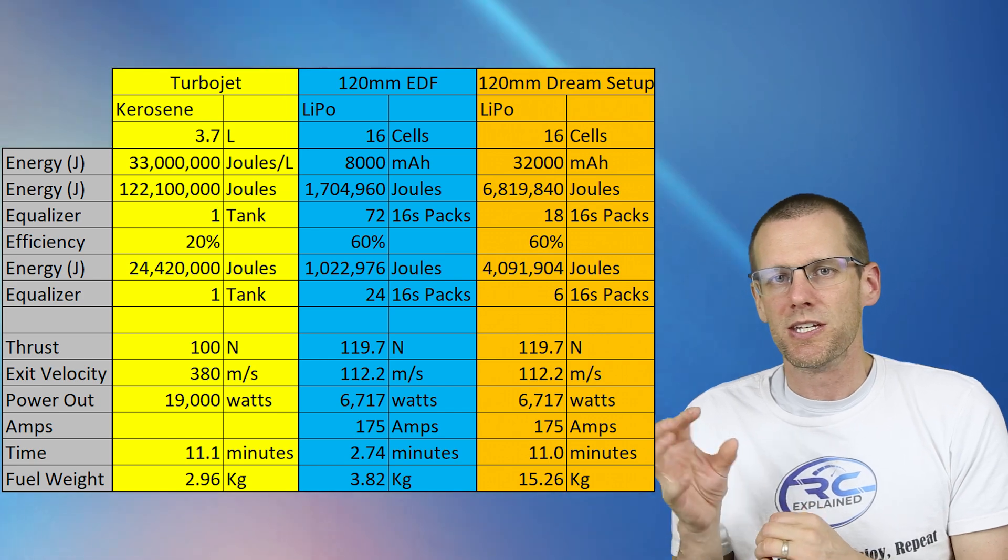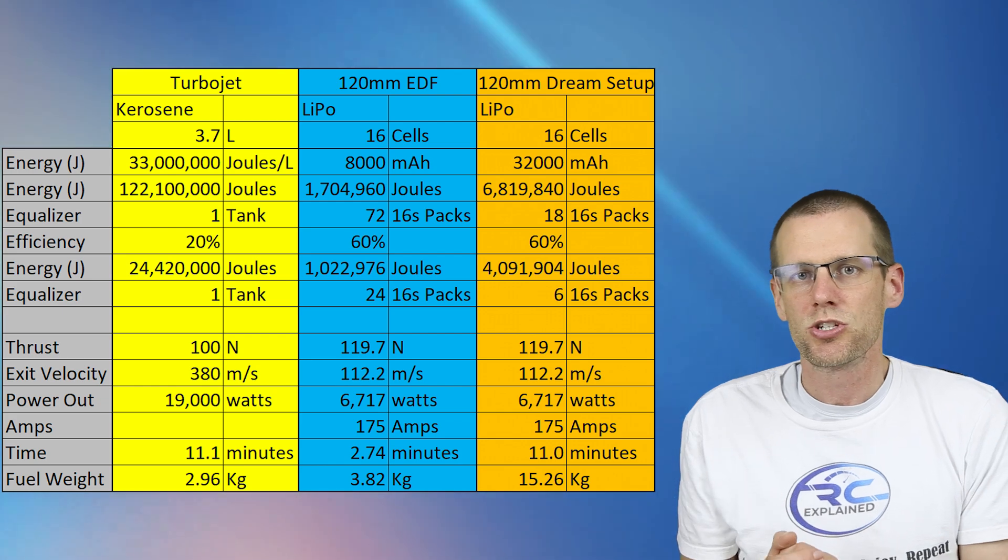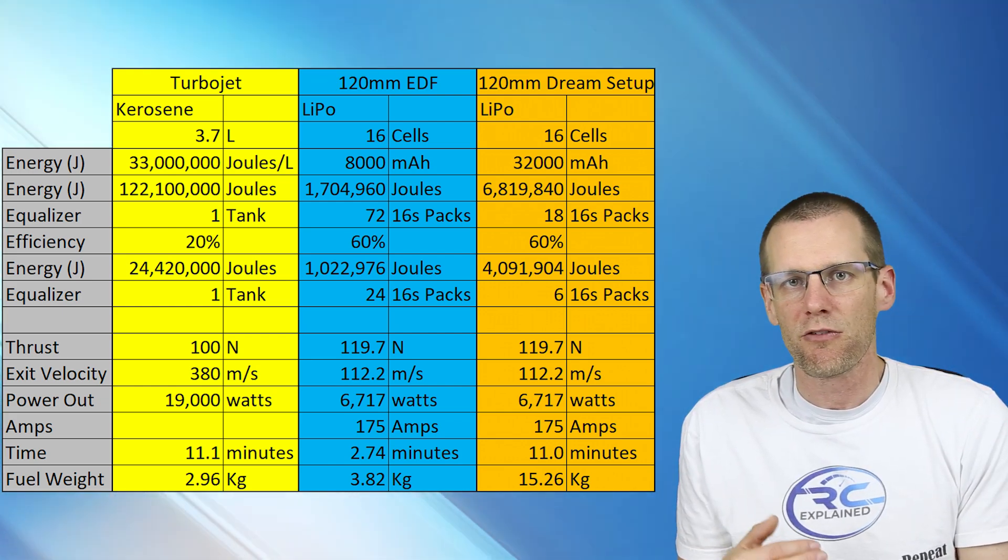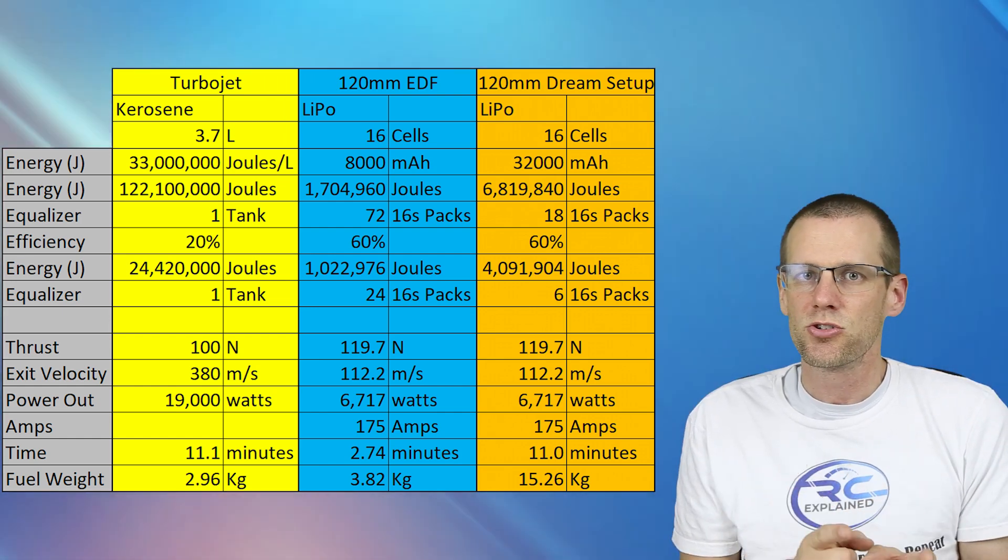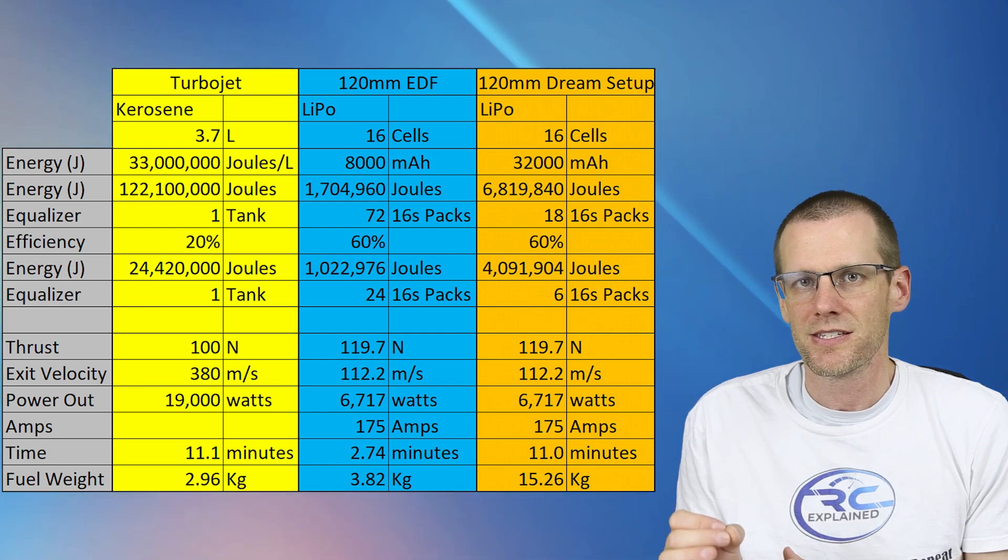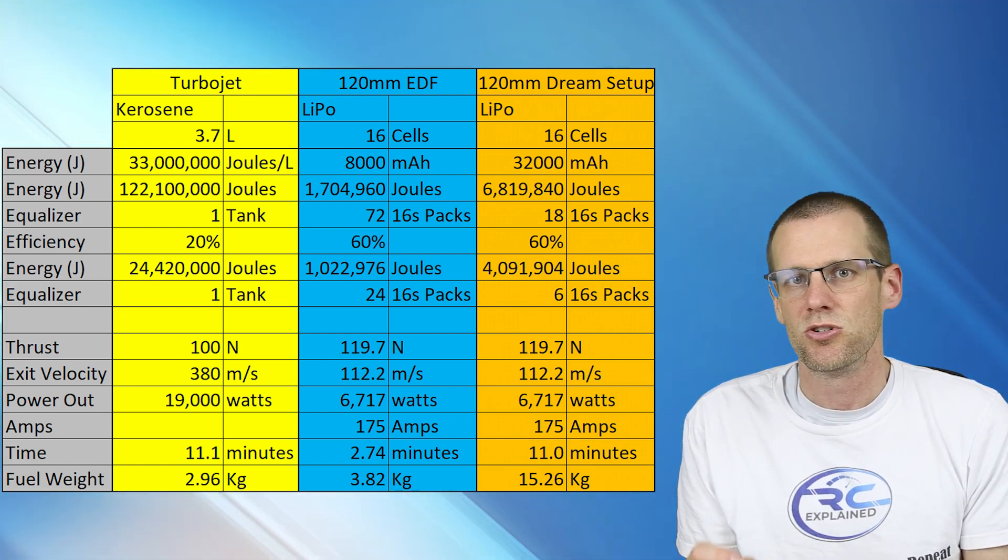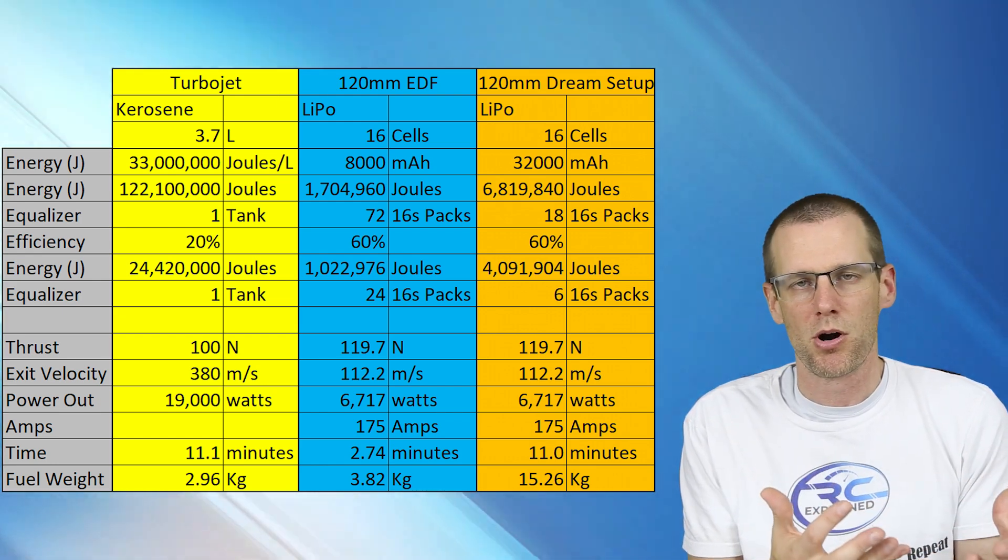Now keep in mind we did compare that the battery pack is actually going to be losing energy as it's being used, which is going to drop the overall amount of power output that we get from that specific setup. This is not exactly true for our turbojet. Our turbojet is going to be able to maintain the same amount of power all the way essentially to that last drop if it could in fact pick that last drop up and of course burn it. It is absolutely mind-blowing to me to see the difference that all of the kerosene has versus battery pack technology here in 2024.